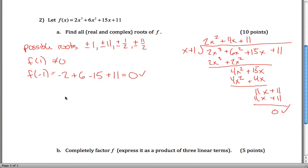So what that means is that F of x is really x plus 1 times 2x squared plus 4x plus 11. And so to find all the roots, we say either x plus 1 equals 0, so x equals negative 1. Or 2x squared plus 4x plus 11 equals 0.